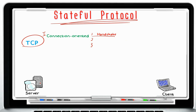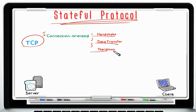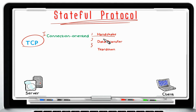The first phase is called the handshake — the connection initialization phase. The second phase is called the data transfer phase — the connection data exchanging phase. The third phase is called the teardown — the connection termination phase. Let's break down each of these phases one by one.